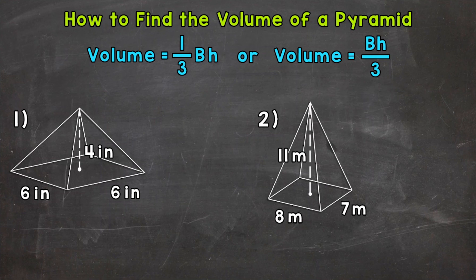Knowing why we do this will give us a better understanding of the formula. So let's jump into number 1, where we have a pyramid with a square base and a height of 4 inches. The first thing we need to do is write out our formula: volume equals 1 third times the area of the base times the height.